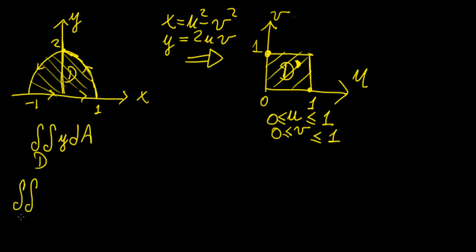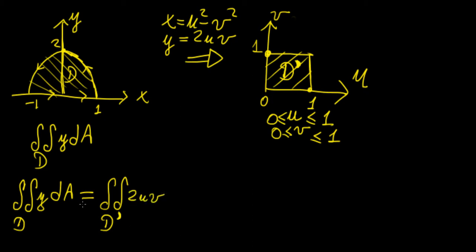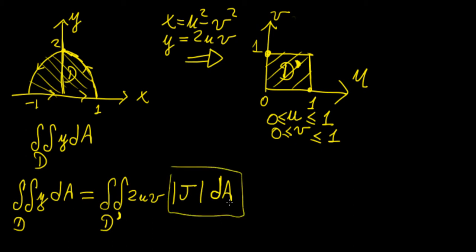The integral over D of the function is going to equal the integral over the new region D' of 2uv — replacing y by the 2uv transformation — times the determinant of the Jacobian matrix of the transformation, times dA. This is a really important concept: we're implementing the Jacobian, introduced in a previous video, to solve a double integral that requires a transformation into a new coordinate system.